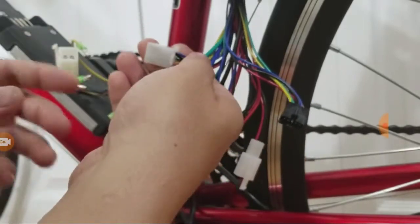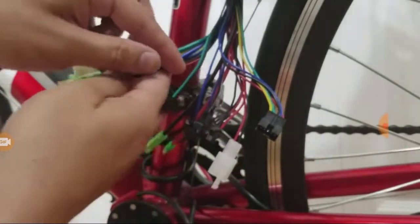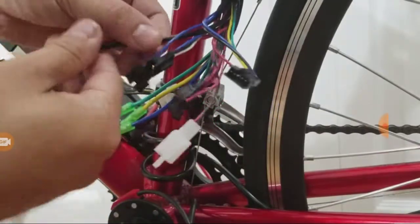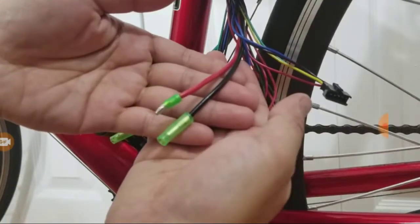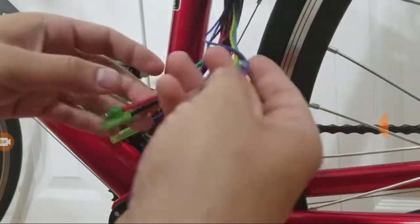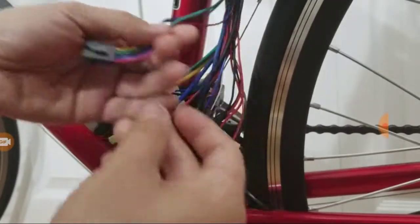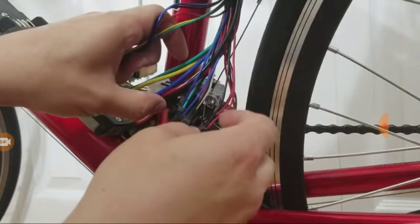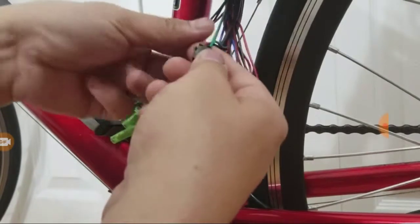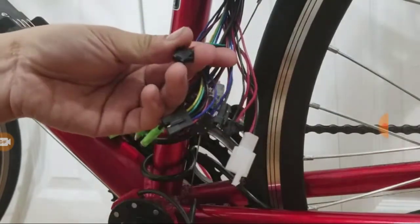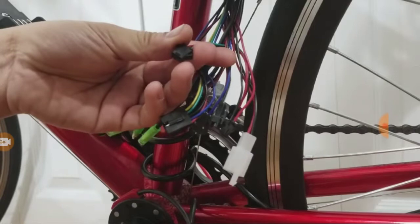These wires will go to the motor. Then we have the red and black wires here—these will go to the battery. And then we have this five-pin connector; this goes to the LCD display. Then we have this three-pin connector, and another...